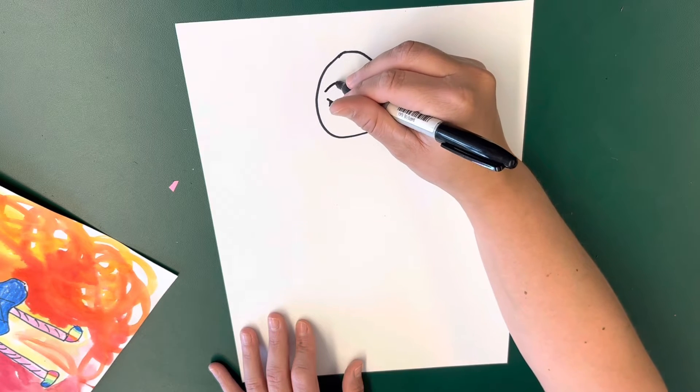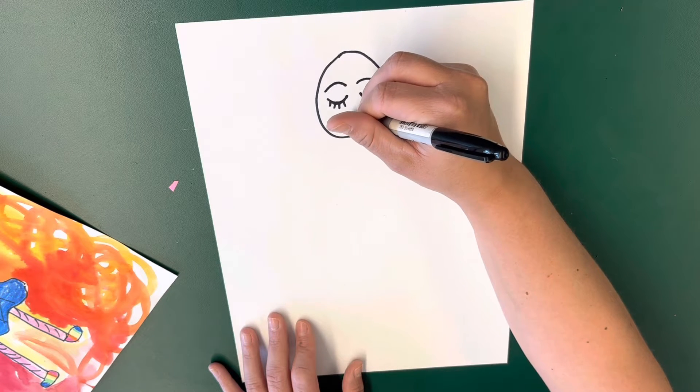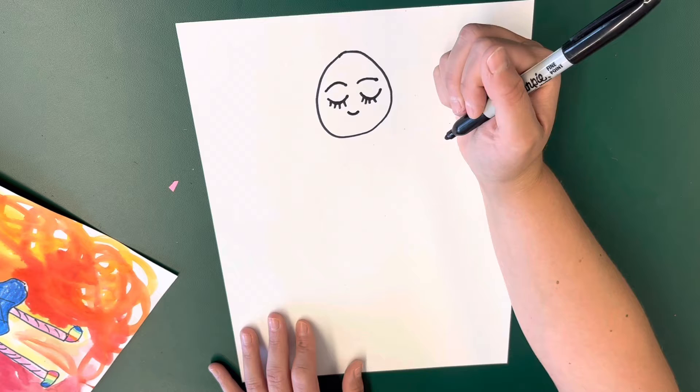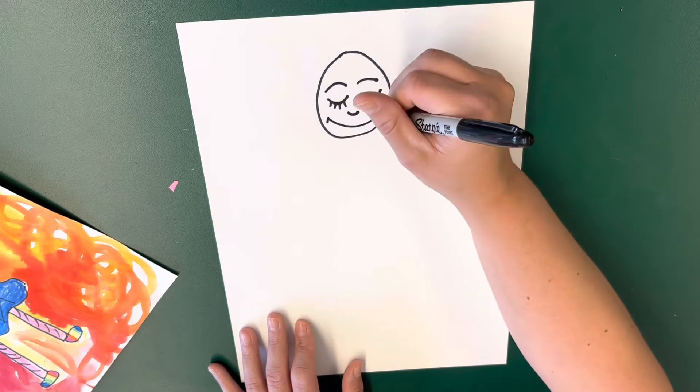Above that I'm going to do an upward curve for the eyebrow, and then the nose I'm going to do another downward curve that's little, and then another bigger upward curve for my mouth because I'm smiling.